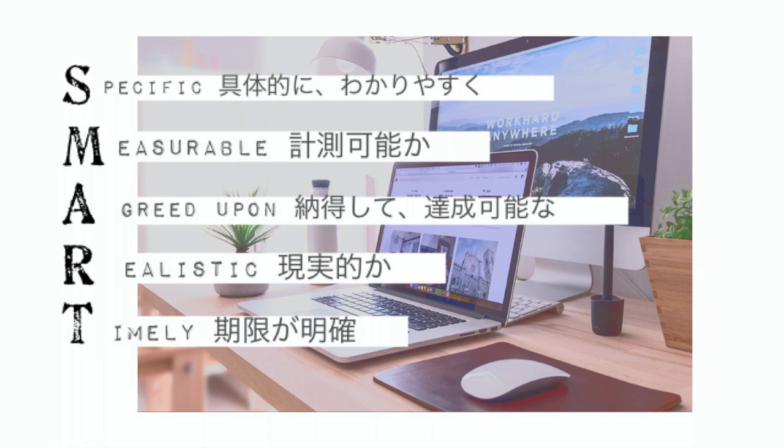AはAgree upon、同意して達成可能なという意味なんですが、こうしなきゃいけないかもしれないみたいな、周りを気にして立てているのではなくて、自分が本当にそうしたいか、自分が納得してこの目標をちゃんと立てているかというのを考えて立てます。